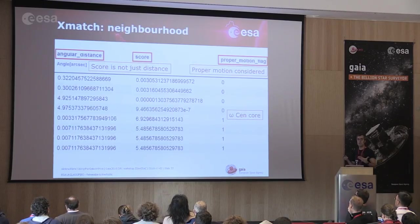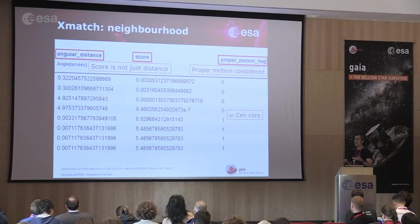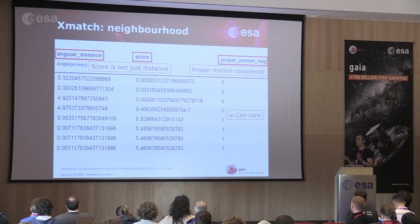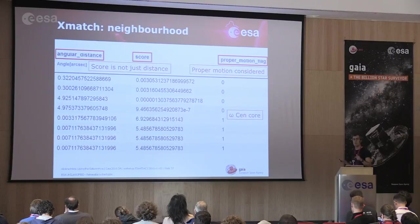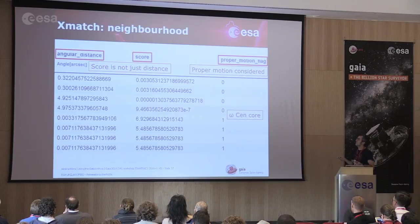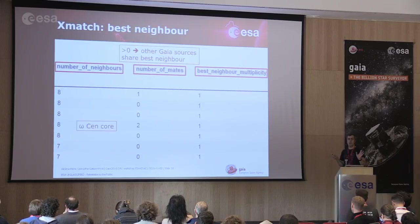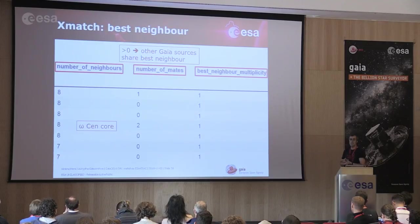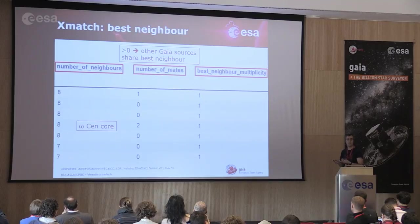The neighborhood table is for cases where you want to do the matching yourself — maybe you have a better idea of how to handle the crowded region. In that table we have not filtered; we've just set the search radius and applied proper motion correction, which is the important thing: you don't need to do the proper motion correction yourself. You can then apply whatever metrics you want. We have applied our own score, which is not just based on distance — distance is a key ingredient but not the only one.